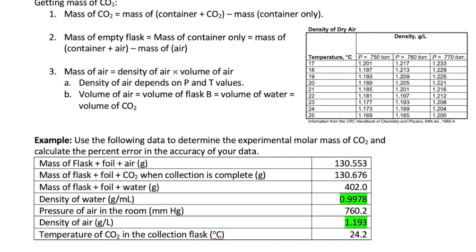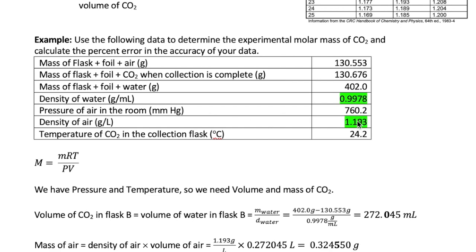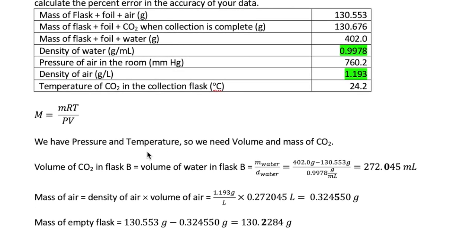Okay, let's see how to do this calculation in the following example. So a student obtains all the data needed for the experiment. Notice the green highlighted values. Those are the values that you will obtain by consulting the two tables, this one and this one that I mentioned earlier. One value is for the density of water and the other value is for the density of air. Okay, so we have to use the equation shown here to get the molar mass of the CO2. We already have the pressure and the temperature, but we need the volume and the mass values for CO2. The volume, if you recall, will be the same as the volume of water in the flask, which we can calculate by dividing the mass of water by its density. The mass of water we can get by subtracting the mass of the flask with foil with water, which is right here, minus the mass of the flask and the foil with just air, which is right here. This gives us a volume of water of 272.045 milliliters, which is also the volume of our CO2.